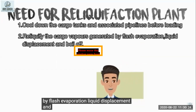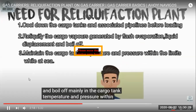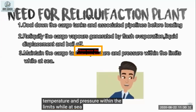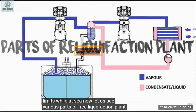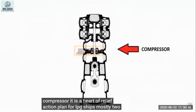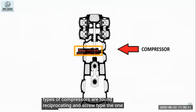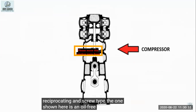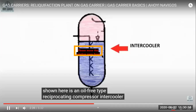We also need to re-liquefy the cargo vapors generated by flash evaporation, liquid displacement, and boil-off. Additionally, we must maintain the tank pressure. Now let's look at the parts of the reliquefaction plant. The first part is the compressor, and you can have different stages. We have either a reciprocating type or a screw type — only these two types are found. The coolant used can be nitrogen.